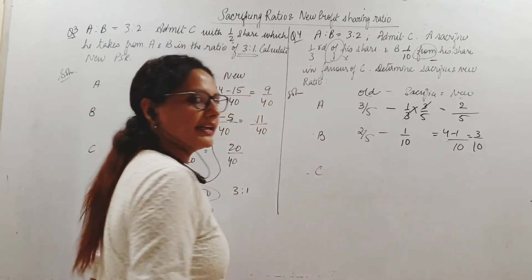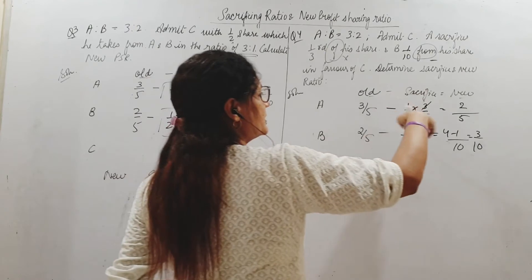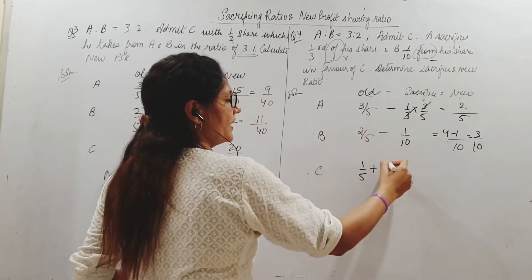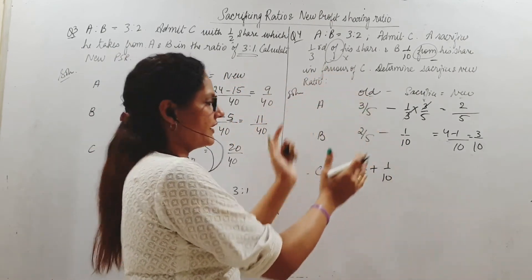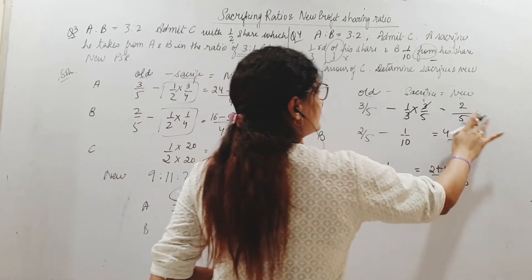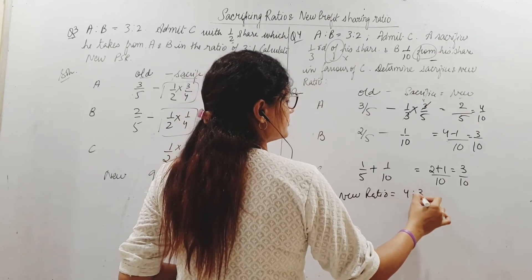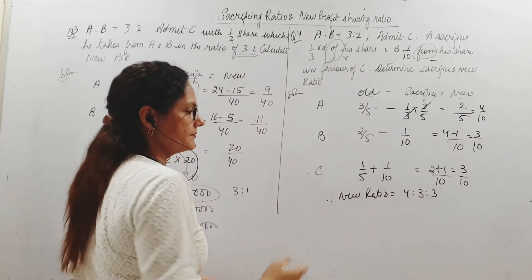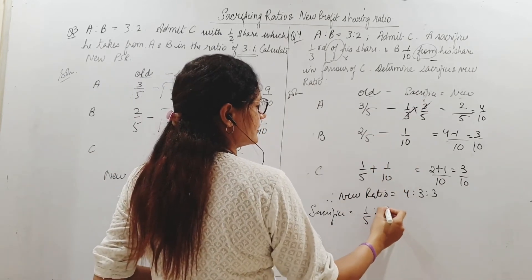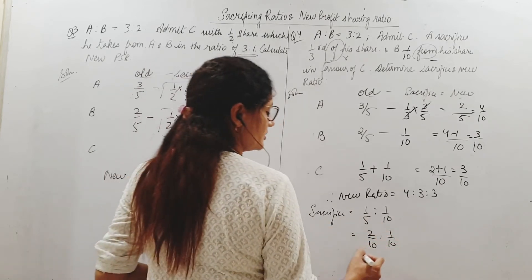C's share is whatever A gives plus whatever B gives: 1/5 from A plus 1/10 from B. Converting: 2/10 plus 1/10 equals 3/10. So C gets 3 by 10. New shares: A gets 2/5 equals 4 by 10, B gets 3 by 10, C gets 3 by 10. New ratio is 4 is to 3 is to 3. Sacrificing ratio: A sacrificed 1/5 equals 2/10, B sacrificed 1/10. So sacrificing ratio is 2 is to 1.